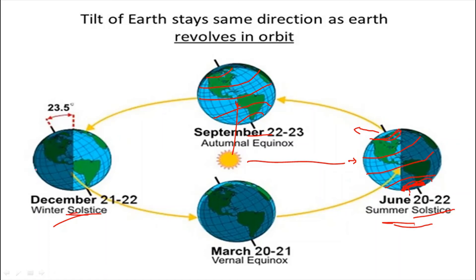Now let's come to the winter solstice on December 22nd. Here, the southern hemisphere is tilted towards the sun. The sun's direct vertical rays fall on the Tropic of Capricorn. The northern hemisphere is tilted far away from the sun, while the southern hemisphere is tilted towards it. There is more heat in the southern hemisphere and less heat in the northern hemisphere. It is summer in the southern hemisphere — the longest day and shortest night in the southern hemisphere.